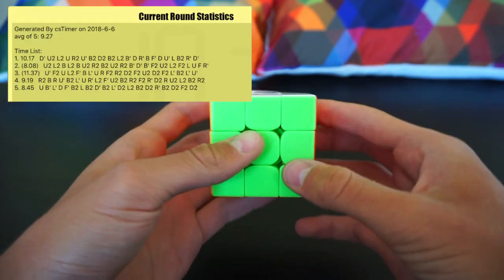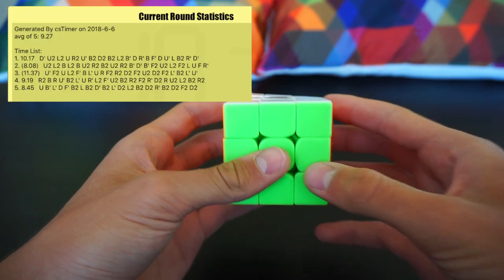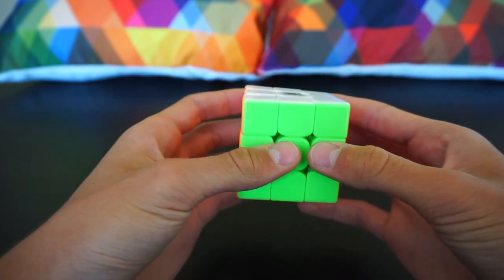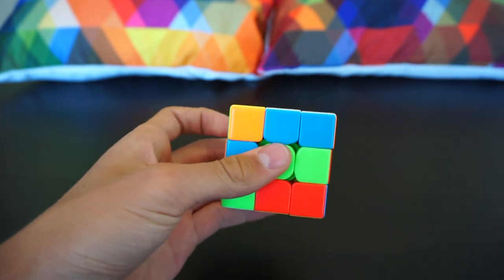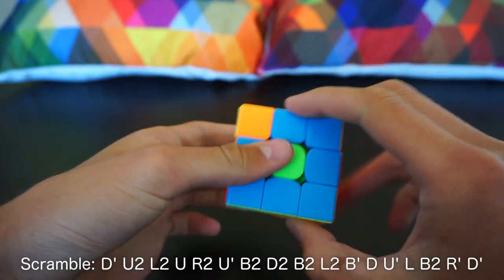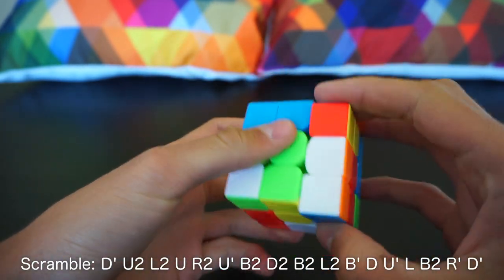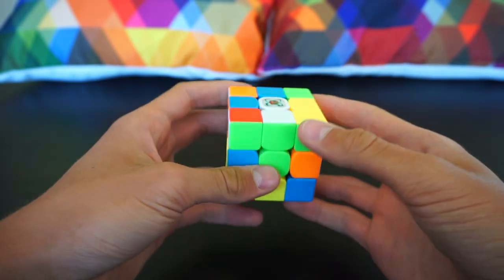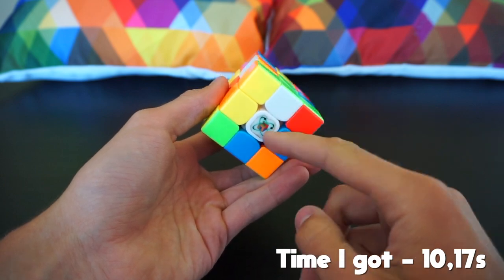This was the first solve and all of the scrambles are going to be on the screen or in the description below. This is the first scramble. As you can see, we have one cross piece already solved.